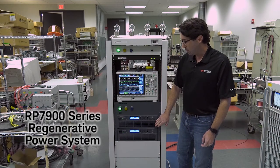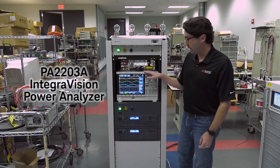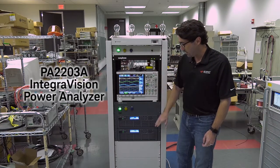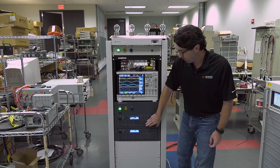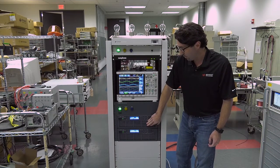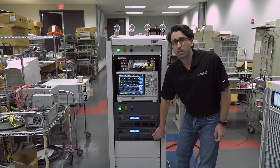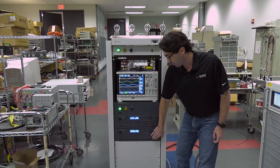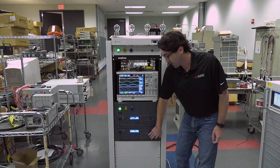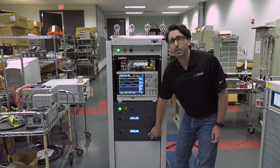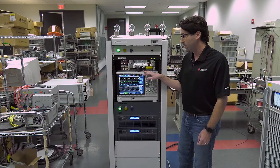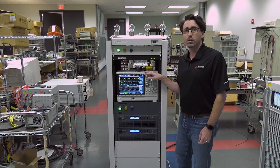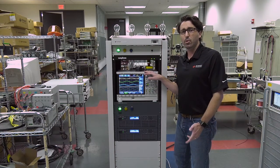What we're going to do is use the power analyzer to measure how cleanly we regenerate power back to the grid. The top regenerative power system will be sourcing power into the bottom regenerative power system, and that one will be taking that power and regenerating it back to the grid. We're going to use the power analyzer to measure the total harmonic distortion of that regeneration to show you how clean that is.